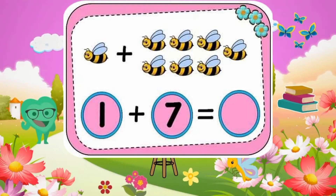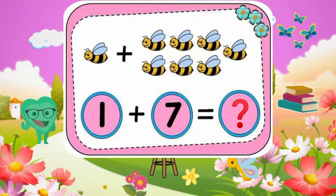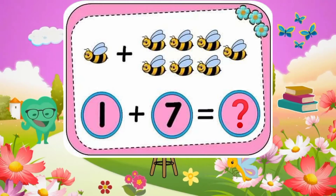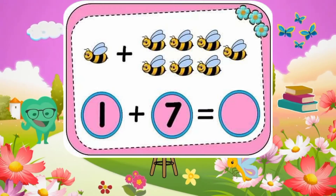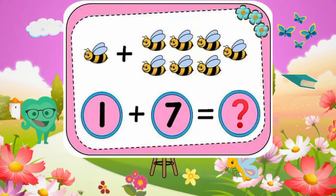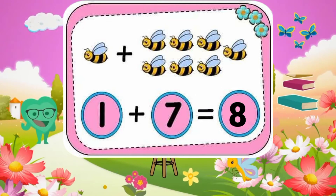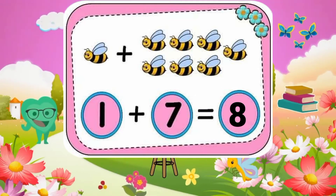1 plus 7 equals what? 1 plus 7 equals 8. Brilliant.